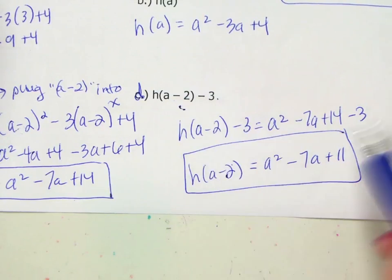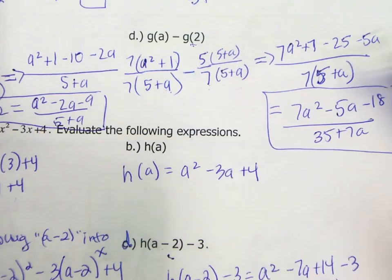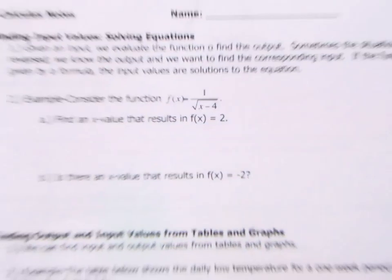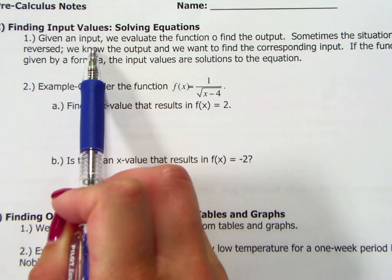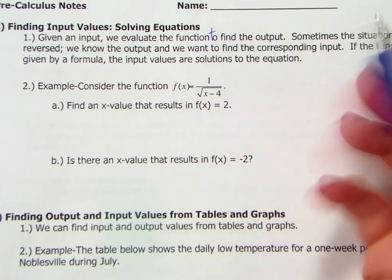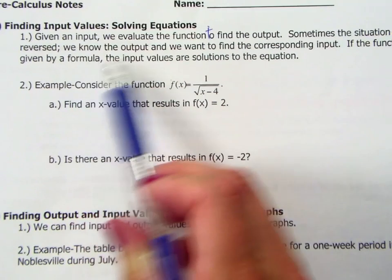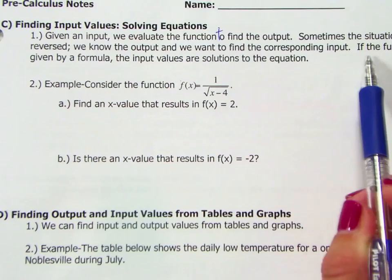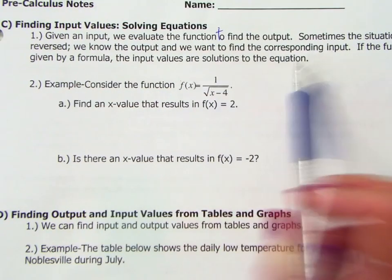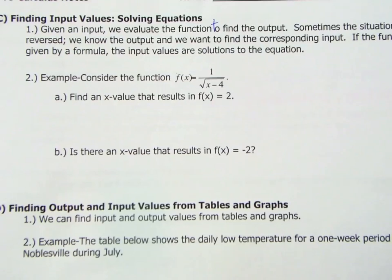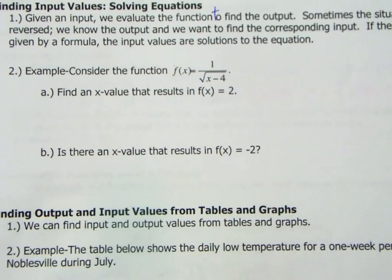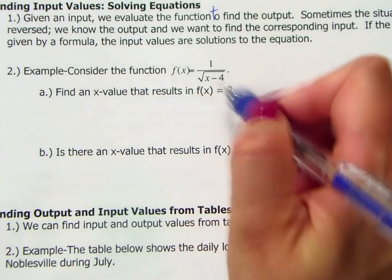Subtracting 3 on the end versus taking, you know, subtracting g(2) or whatever it is. Okay, so we just did a whole slew of examples finding output values. But what if we're going the other way? So what if we're given an input, excuse me, given an input, we evaluate the function to find the output. That's what we just did. But sometimes the situation is reversed when we know the output and need to find the corresponding input. So if the function is given by a formula, the input values are solutions to the equation. So if you look at this example, it says consider the function f(x) equals 1 over the square root of x minus 4.